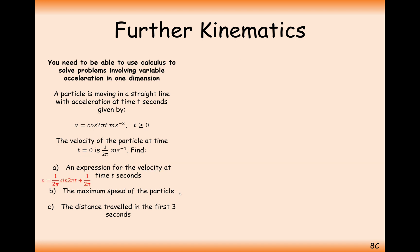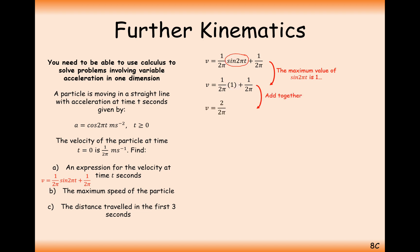Moving on to find the maximum speed. The maximum value that sine can reach is 1. So replacing sine 2πt with 1, we get 1 over 2π plus 1 over 2π, which equals 1 over π. So the maximum velocity is 1 over π meters per second. Note that sometimes you could be asked to find the times when this speed is achieved, in which case you'd need to find the value of 2πt that makes the whole expression equal to 1.